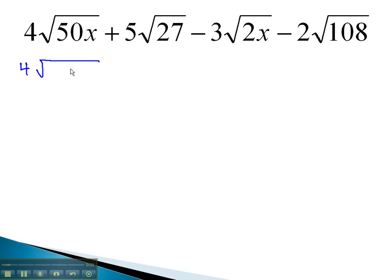The prime factorization of 50 is 2 times 5 squared, with an x, plus 5 times the square root of 27, which is 3 cubed, minus 3 times the square root of 2x—2 is already prime—minus 2 times the square root of 108. Finding its prime factorization is 2 squared times 3 cubed.